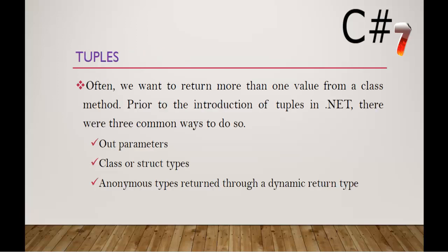Often we want to return more than one value from a class method. Prior to the introduction of tuples in .NET, there were common ways to do so. If you want to return multiple values from a method, we can achieve that with the help of out parameters, or class or struct types, or anonymous types returned through a dynamic return type. These are the ways we can use to return multiple values from a method.